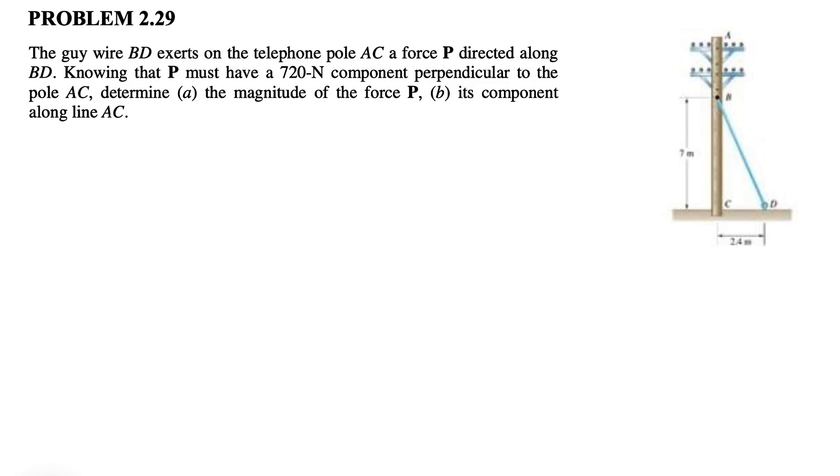All right, guys, welcome to the channel. We're going to be solving question 29 from the second chapter of the Beer and Johnson textbook. We have this pole AC that is attached to the cable BD, and we know we have a force P directed along BD.